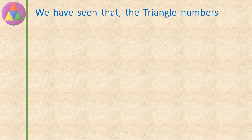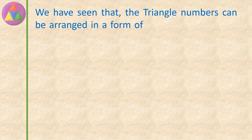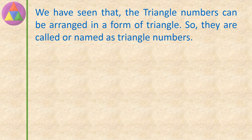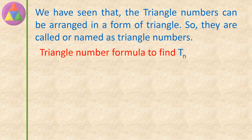We have seen that the triangle numbers can be arranged in the form of a triangle, so they are called or named as triangle numbers. The triangle number formula to find the Tn number is: Tn equals n into (n plus 1), divided by 2.